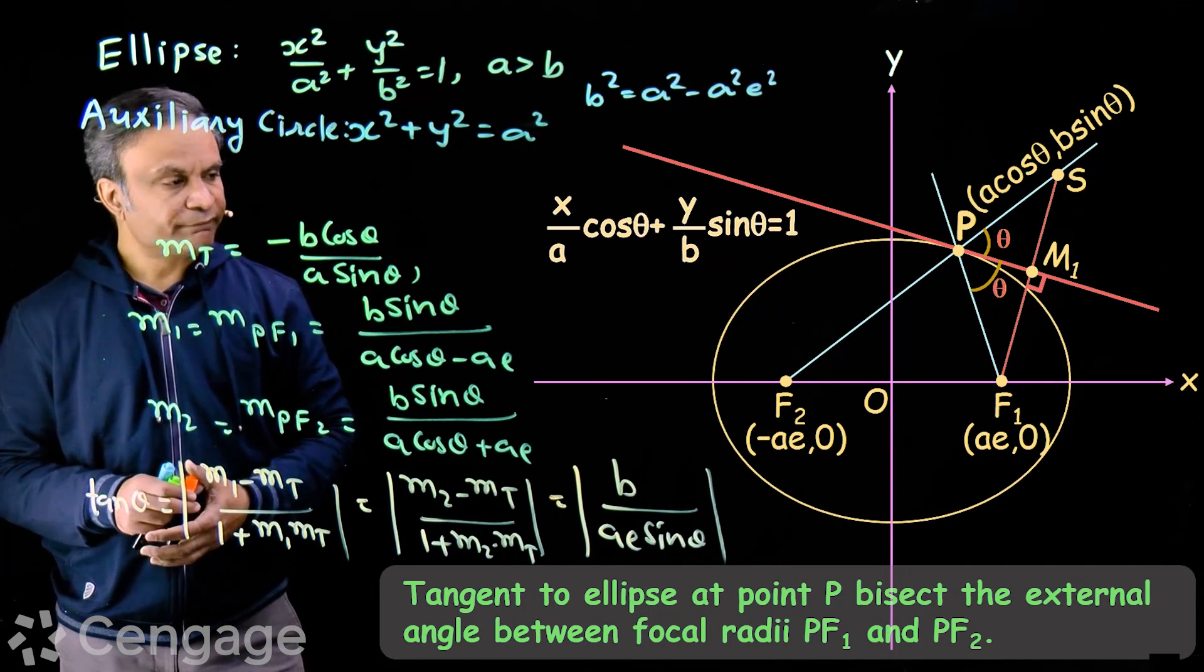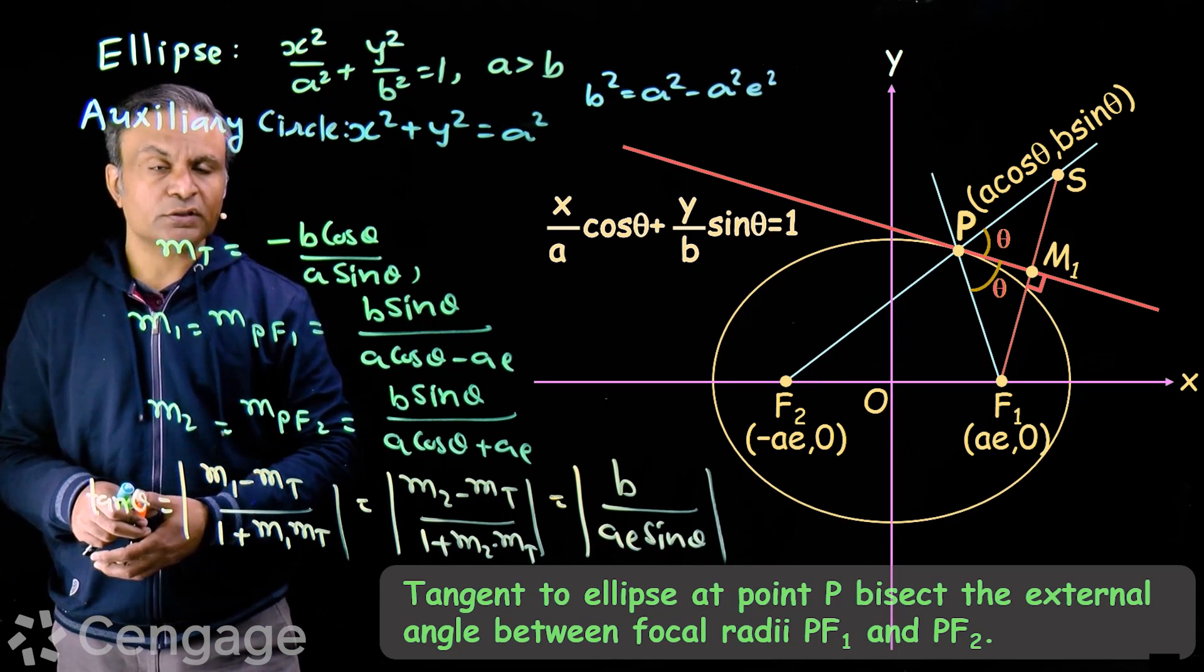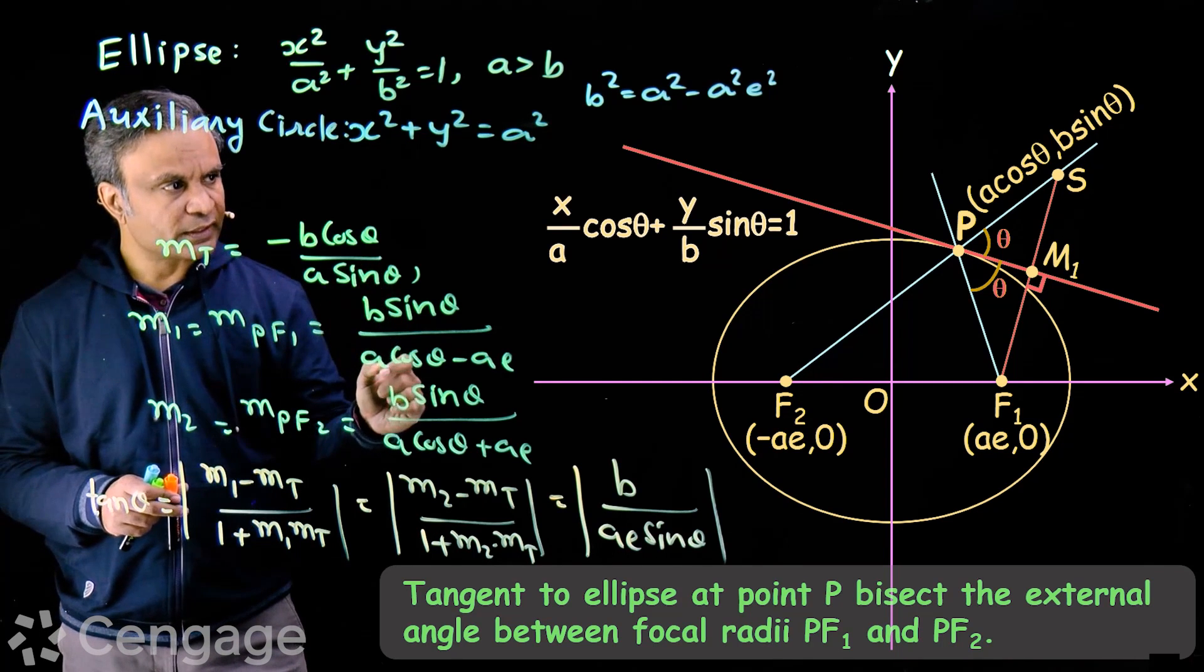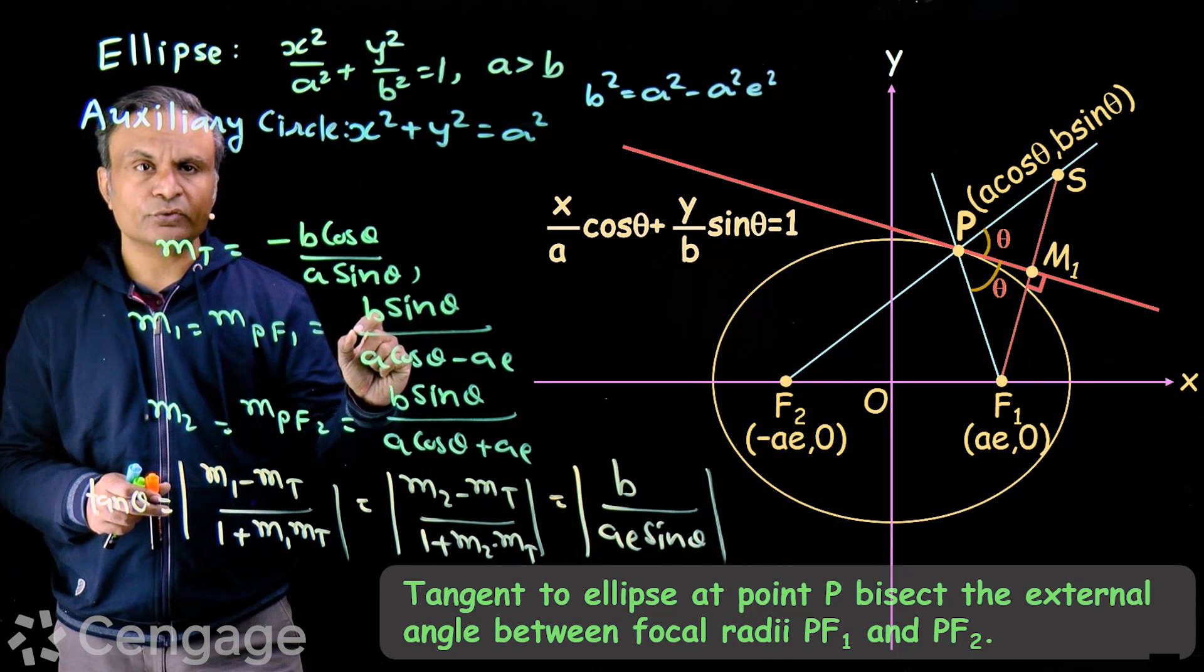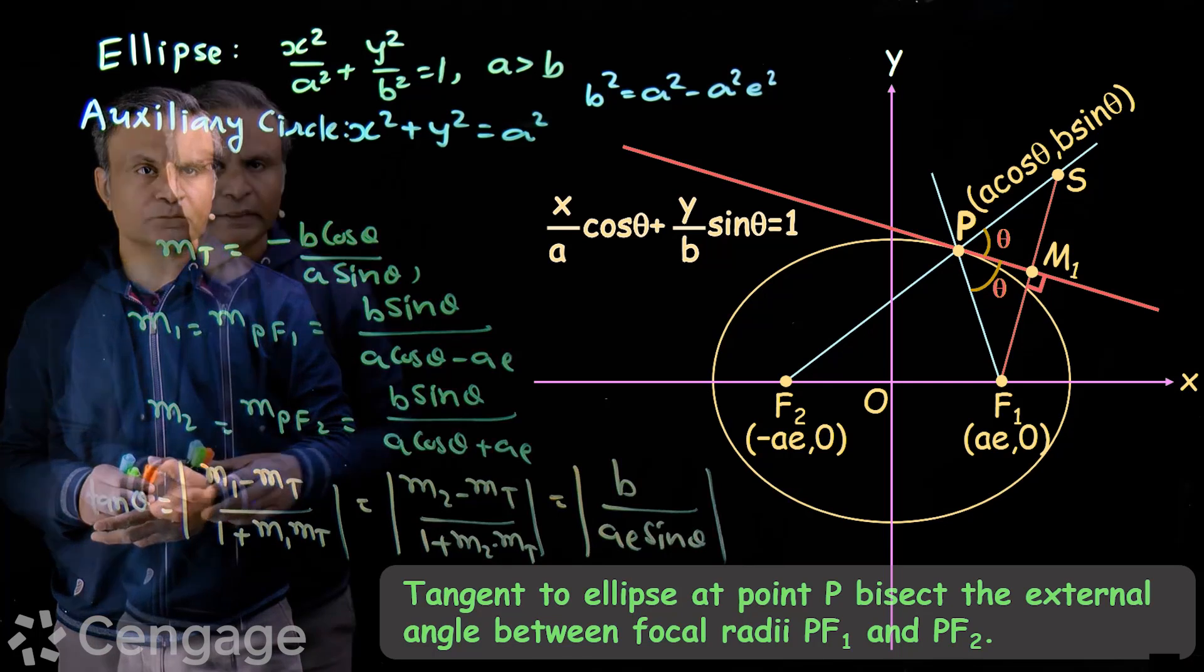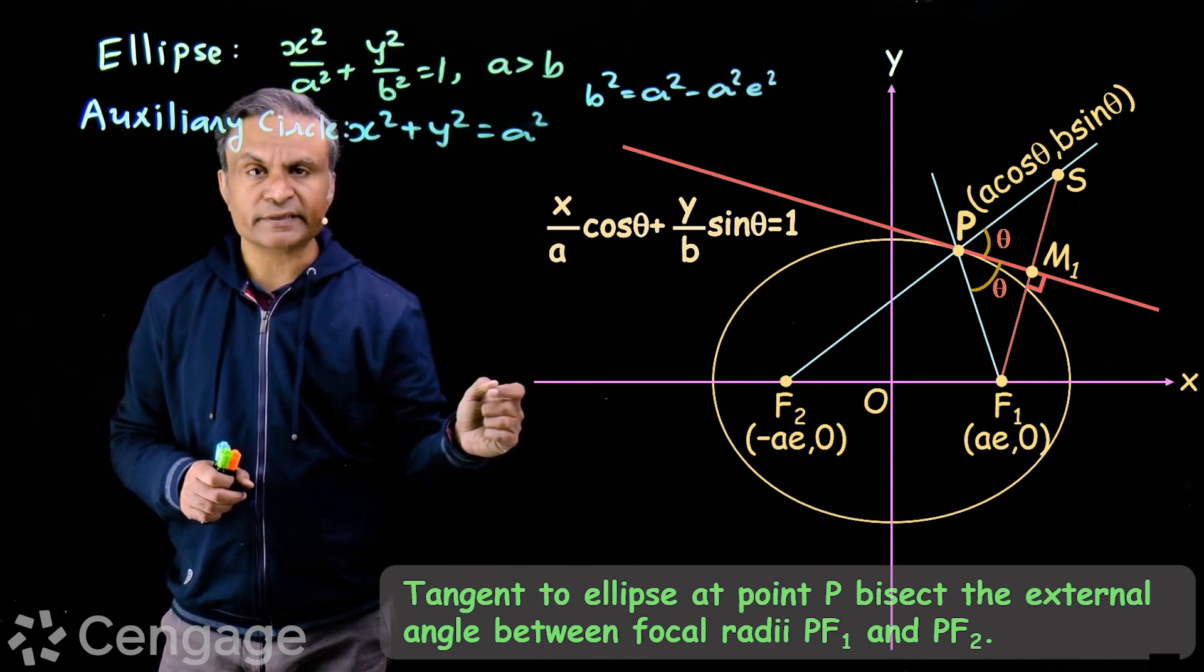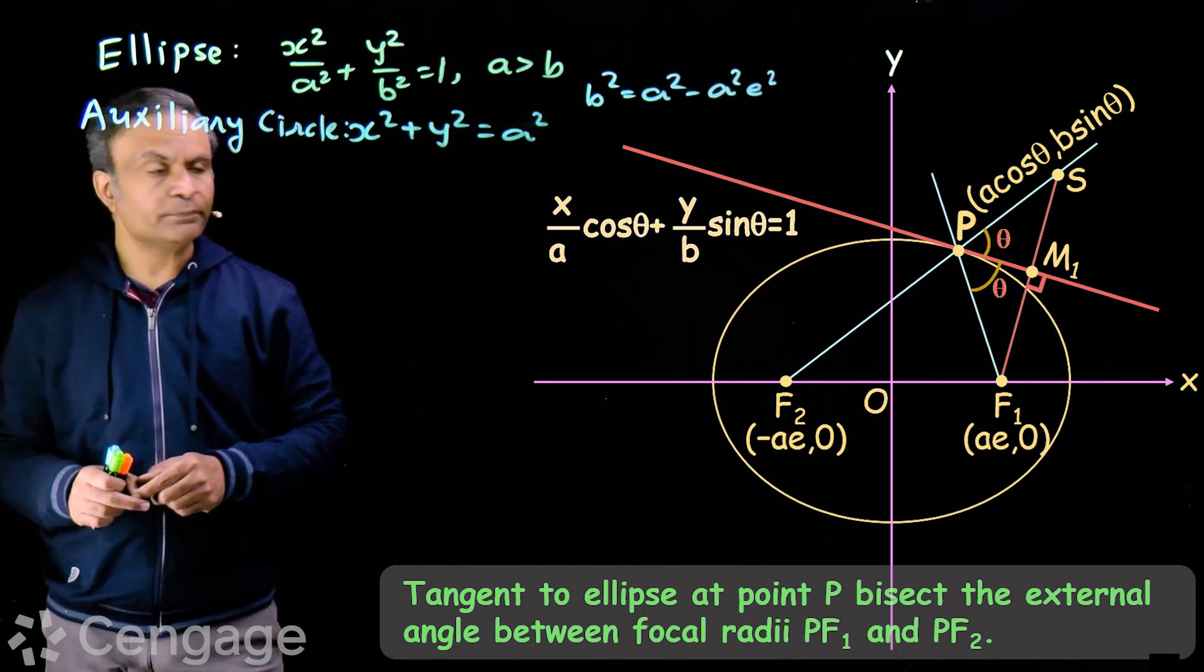Also, reflection of point F1 in the tangent lies on the line PF2. In this figure, point S is reflection or image of focus F1 in the tangent line. Point S will lie on line PF2.